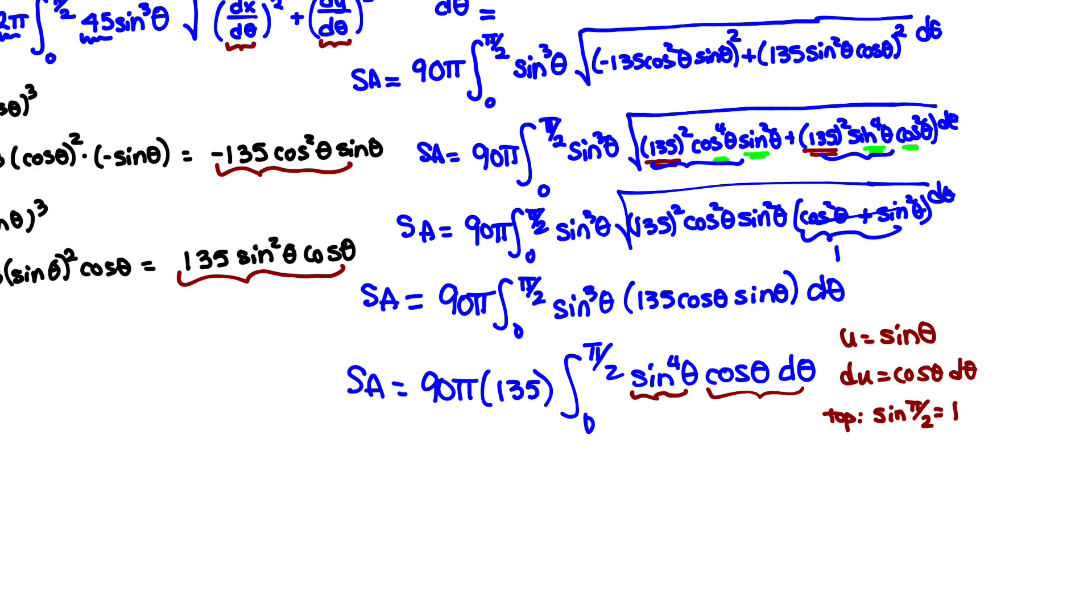That means instead of π/2, I'm going to have sin(π/2), or just 1 being my top limit. And my bottom, instead of being 0, is going to become sin(0), or just 0. That's based on the fact that I'm changing from theta limits into u limits. So I want to use my u function to help determine my top and bottom limits.